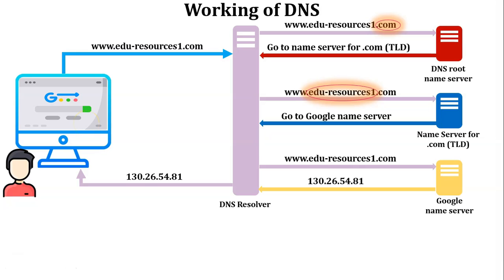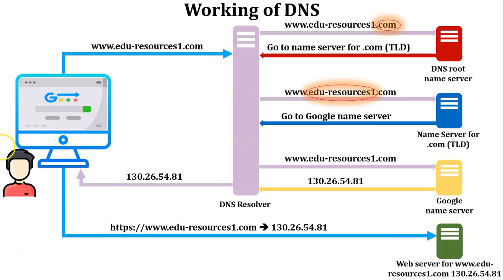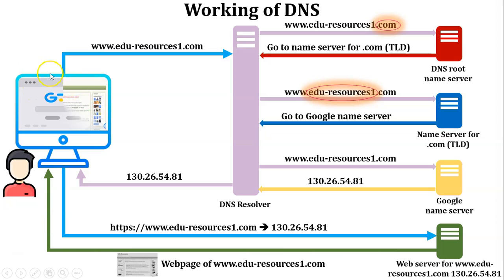The DNS resolver passes this IP address to the user's web browser. The user's browser then searches for this IP address on the internet and connects to the web server eduresources1.com. The web server accepts the request from the user's browser, sends the requested page back to the browser, and that requested page is displayed in the user's browser. That is the working of DNS.